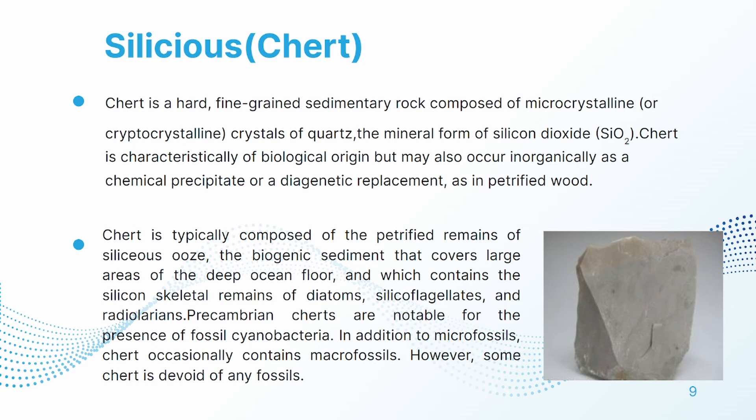Chert is typically composed of the petrified remains of siliceous ooze, the biogenic sediment that covers large areas of the deep ocean floor, and which contains the silicon skeletal remains of diatoms, silicoflagellates, and radiolarians. Precambrian cherts are notable for the presence of fossil cyanobacteria. In addition to microfossils, chert occasionally contains macrofossils. However, some chert is devoid of any fossils.